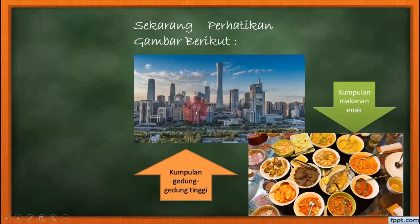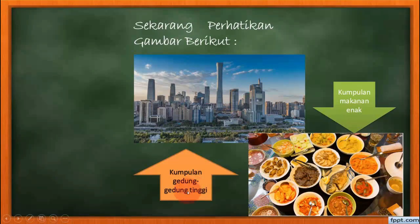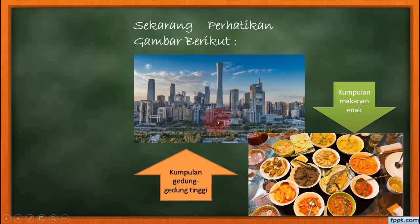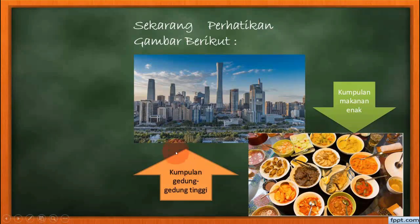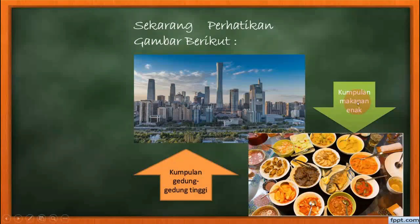Sedangkan contohnya gedung yang tinggi — di sini banyak sekali gedung yang tinggi, tidak disebutkan kriteria ketinggiannya, maka penilaian orang akan berbeda-beda. Kecuali jika disebutkan gedung yang tinggi melebihi dari seribu meter, maka gedung di bawah ketinggian seribu meter tidak masuk kriteria. Tapi jika tinggi tidaknya tidak terukur dengan jelas, begitu pun dengan kumpulan makanan enak — enak tidaknya tidak dapat terukur dengan jelas.